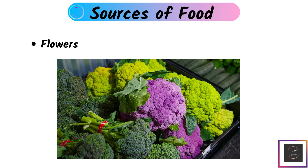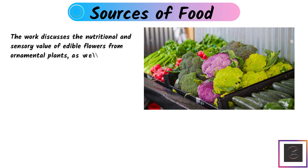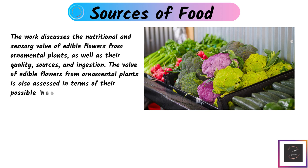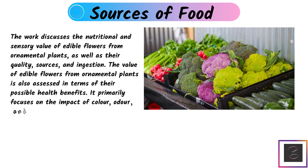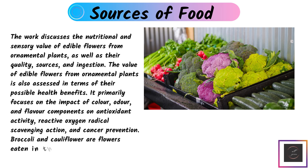Flowers: Edible flowers from ornamental plants have nutritional and sensory value, as well as possible health benefits. They are notable for the impact of color, odor, and flavor components on antioxidant activity, reactive oxygen radical scavenging, and cancer prevention. Broccoli and cauliflower are flowers that are eaten in the form of vegetables.